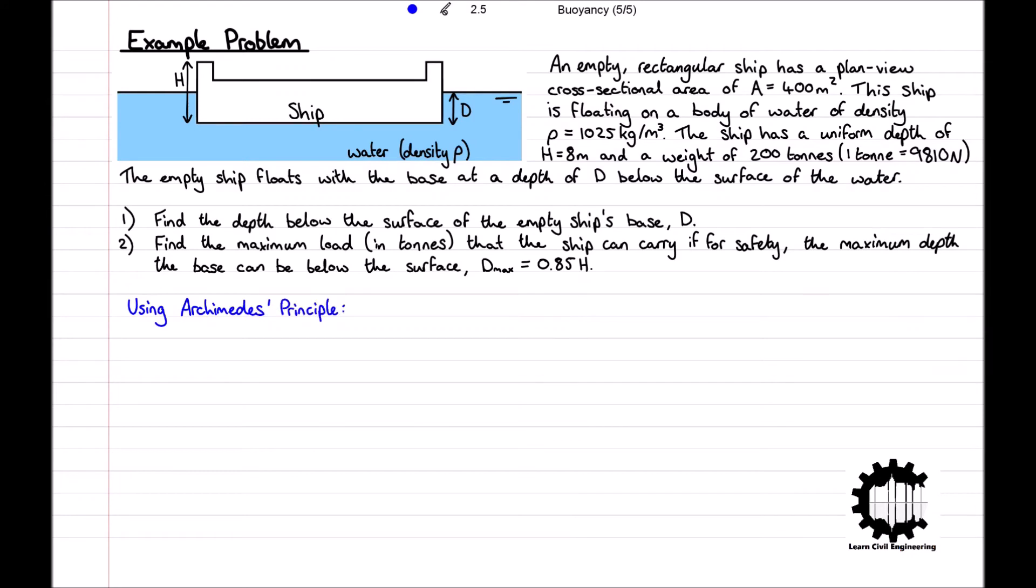Using Archimedes' principle, where the buoyancy force acting on the partially immersed ship equals the weight of fluid displaced by the ship, we get the buoyancy force Fb = ρgdA, as d times A is the volume of the ship below the water surface.